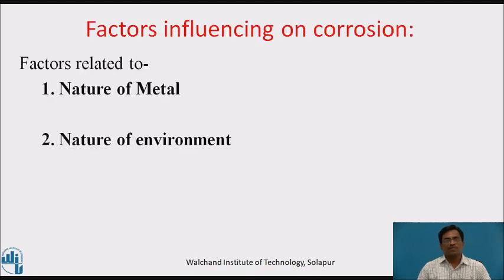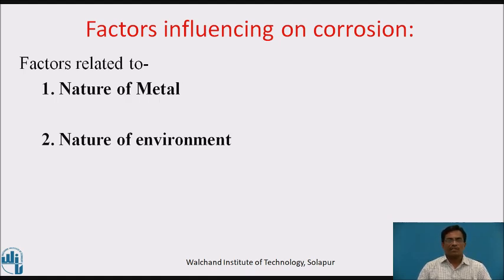Factors influencing the rate of corrosion. There are two basic factors: first, factors related to the nature of metal, and the second one is factors related to the nature of environment.